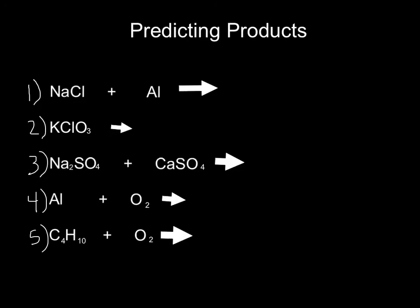These are some reactions where I've given you just the reactants, and you should be able to predict the products once you determine what type of reaction it is. Look at your keys for kids from this presentation. A little help: when you have a chlorate, ClO3, it's going to make a chloride compound and oxygen gas every time. Make sure you're checking the charges when writing the product formulas. Pause this and work on these problems — I'll see you next time.